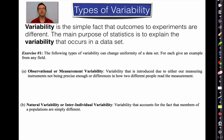There are quite a few different types of variability and in exercise one we're going to walk through them. The following types of variability can change the uniformity of a data set. In other words, if everything was the same, every single data point in our experiment would be identical. But that's not the case — there's variability. The first type we're going to look at is what's called observational or measurement variability.